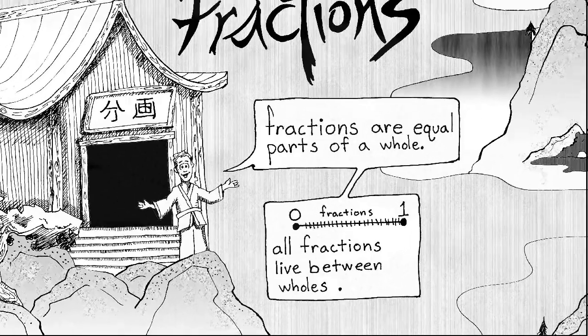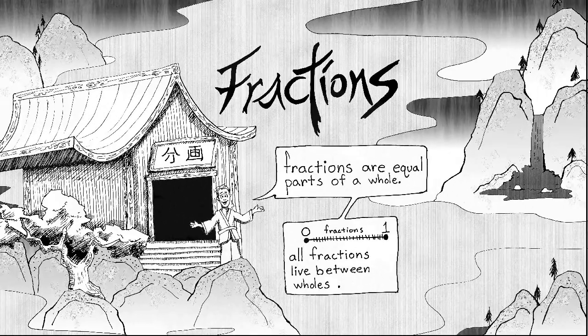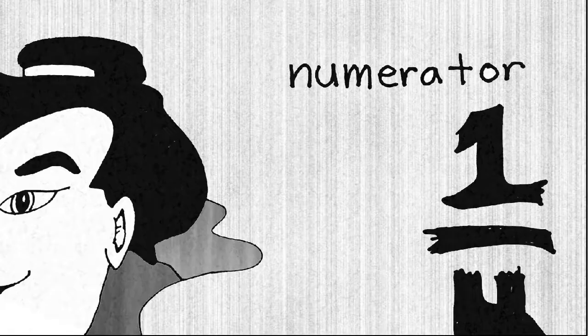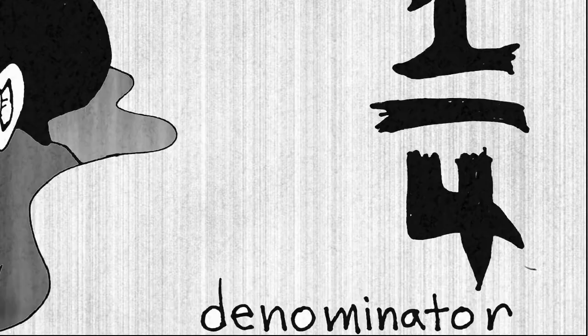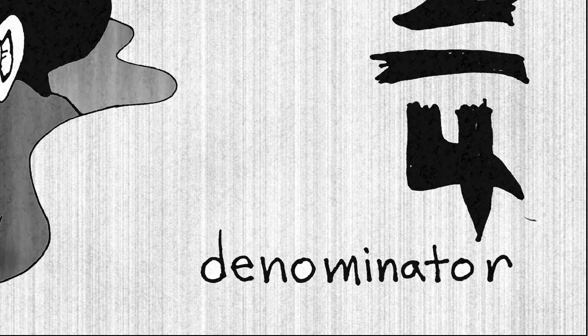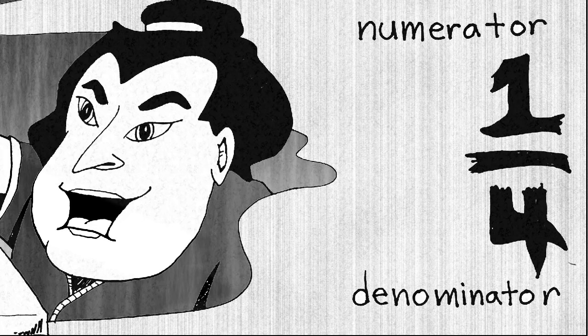That's when we start using fractions. So how do we write a fraction? Here's an example of a fraction. There's always a number on the top, a line, and a number on the bottom. The number on the top has a special name called a numerator. The number on the bottom has a special name called a denominator. Each one of those has a very important job in communicating the value of a fraction.